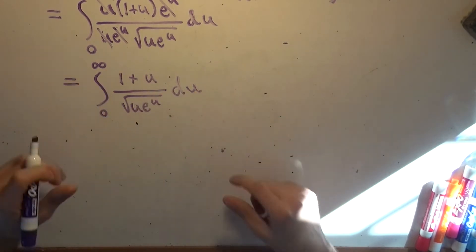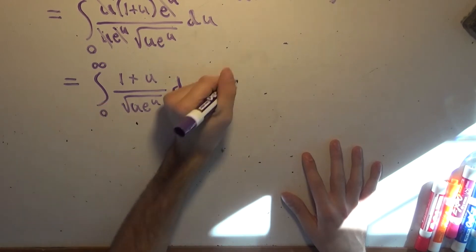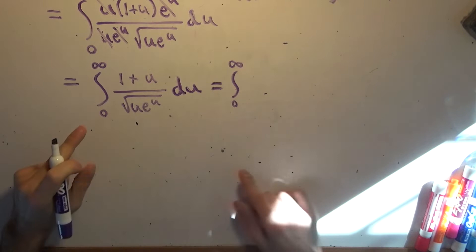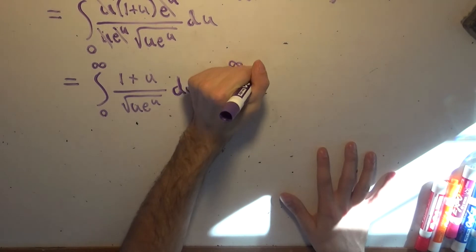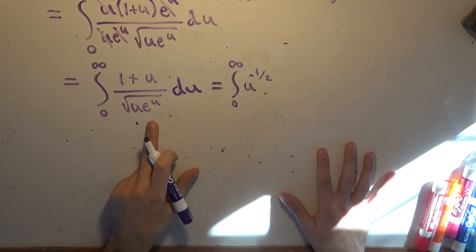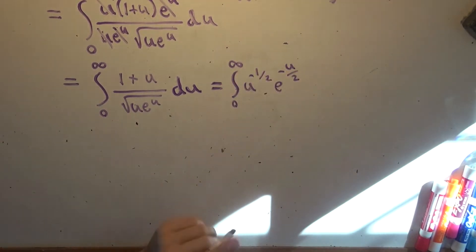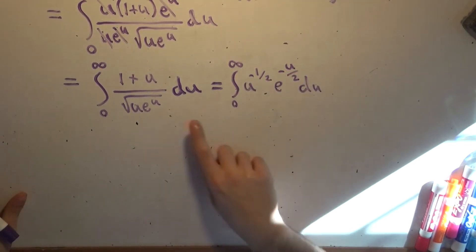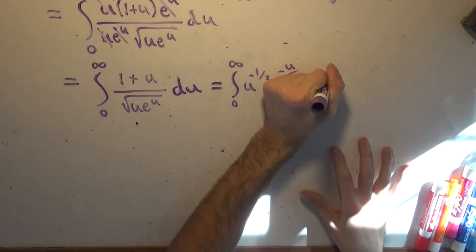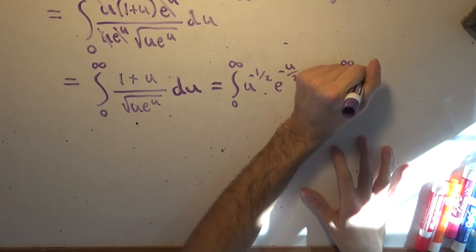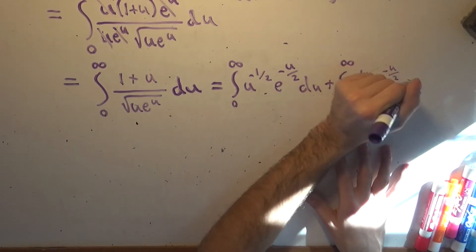Now we're simply going to split up the integral into two pieces. The first one has 1 over the square root of u, which is u to the negative one half, and 1 over the square root of e to the u, which is e to the negative u over 2. Then we add the second integral: u divided by the square root of u is u to the one half, times e to the negative u over 2, du.